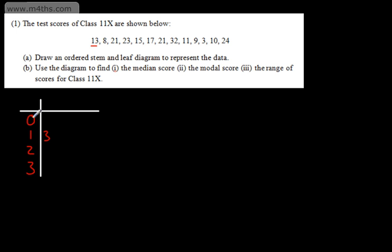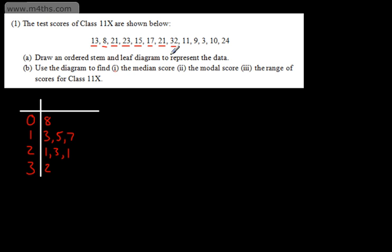Now let's look at 8 — that's 0 tens and 8 units, so that goes there. 21: 2 tens, 1 unit. 23: put a comma and then a 3. 15 — 1 ten and 5 — comma, 5 goes in. 17: comma, 7 goes in. 21 again — comma, 1; if you've got 2 of the same number, you need to put 2 of them in. 32: 3 and 2 goes there. 11 goes there. 9: 0 tens, 9. 3: 0 tens, 3. 10: 1 ten, 0. And finally, 24: 2 tens and 4.